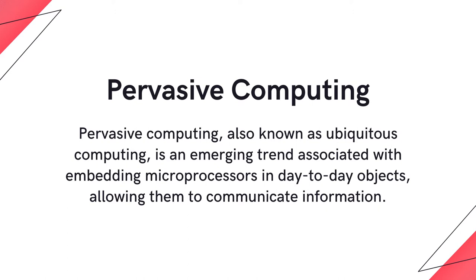If you're still a bit confused, you might be familiar with the term IoT, or Internet of Things. Smart home systems such as Google Home or Alexa are some real-life examples of pervasive computing. Pervasive computing itself is not a physical computer — rather, it's just an idea that eventually normal everyday objects will be connected with one another.